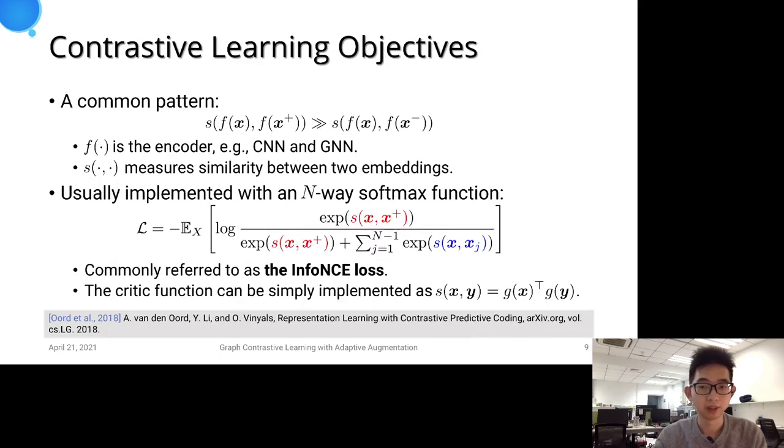Formally, for any data point x, the contrastive learning aims to learn an encoder function f such that the similarity between x and its congruent part x+ is greater than the similarity between x and its dissimilar sample, the negative x-.